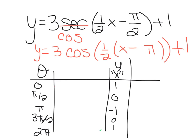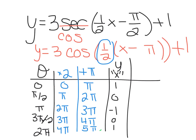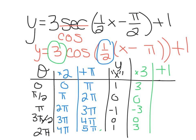For the angle transformation, there's a multiply by 1/2, so I do the opposite and divide by 1/2, which is the same as multiplying by 2. That gives angle values: 0, π, 2π, 3π, 4π. Then I add π to each: π, 2π, 3π, 4π, 5π. For the y-values, following order of operations I multiply by 3 first: 3, 0, negative 3, 0, 3. Then I add 1 to get: 4, 1, negative 2, 1, 4.